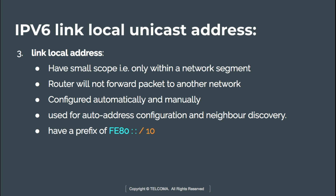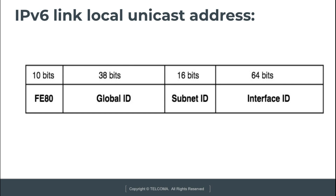The link local address has a prefix of fe80:: with a prefix notation of /10. In the link local unicast address format, the first 10 bits are reserved for the prefix (fe80), followed by 38 bits reserved for the global ID, 16 bits for the subnet ID, and 64 bits for the interface ID.